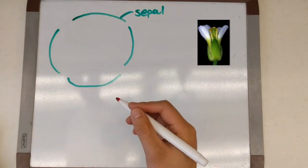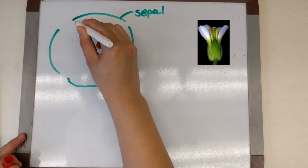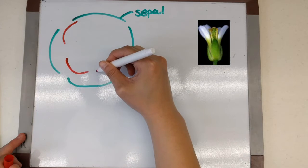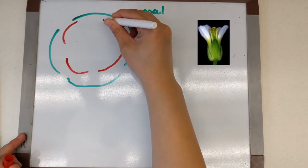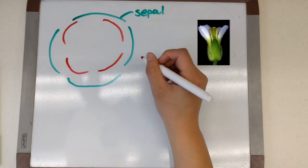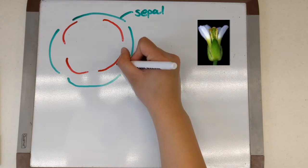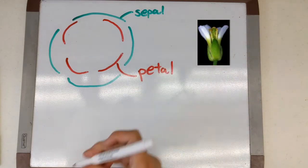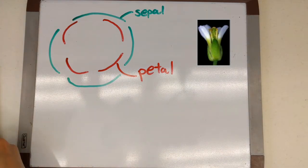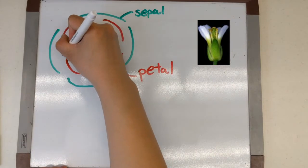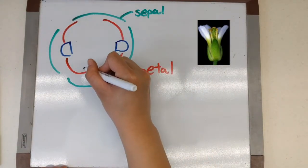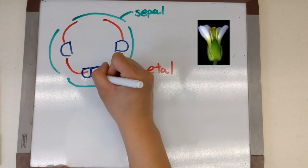So on the outside we have the sepals. These are the green leaf-like structures typically found directly underneath the flower and they function to protect the flower while it's developing. Next we have the petals. These of course are what give the flowers so much color and are used to attract pollinators which will aid in reproduction as they carry pollen onto other flowers.